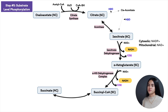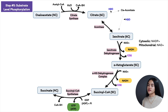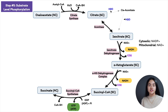In step five, succinyl-CoA is converted to succinate, catalyzed by succinyl-CoA synthetase. This reaction is reversible. The high-energy thioester bond is used to produce GTP or ATP — GDP and inorganic phosphate combine to form GTP. GTP and ATP are energetically equivalent. This step is an example of substrate-level phosphorylation.